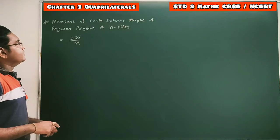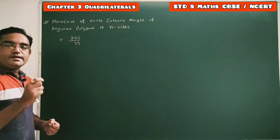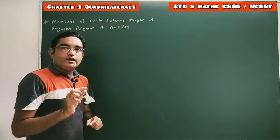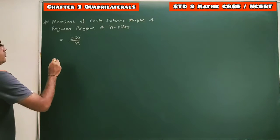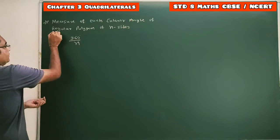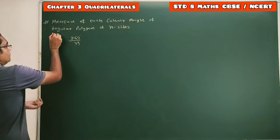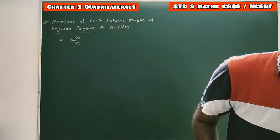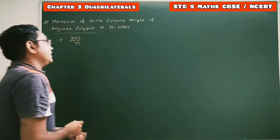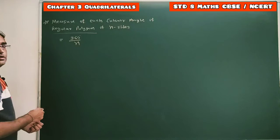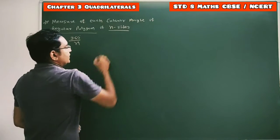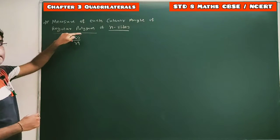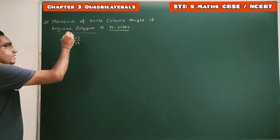We will discuss the measure of each exterior angle of a regular polygon of n sides. We are given a regular polygon. A regular polygon means the measure of each side is equal. So we are given one regular polygon with n sides, and all n sides are equal.